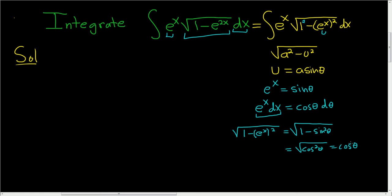So now we're ready to rewrite our original integral. So we have the integral of e to the x dx, that's just cosine theta d theta. And then this piece here, this we said was cosine theta. So we get cosine theta times cosine theta d theta. Cosine theta times cosine theta is cosine theta squared, or cosine squared theta.